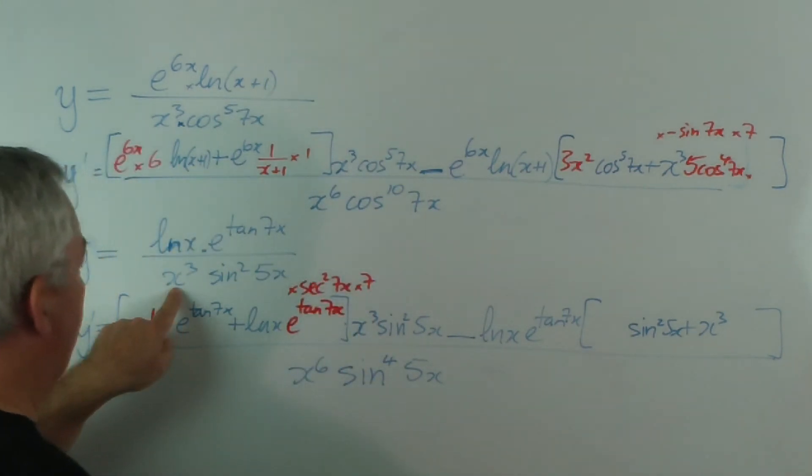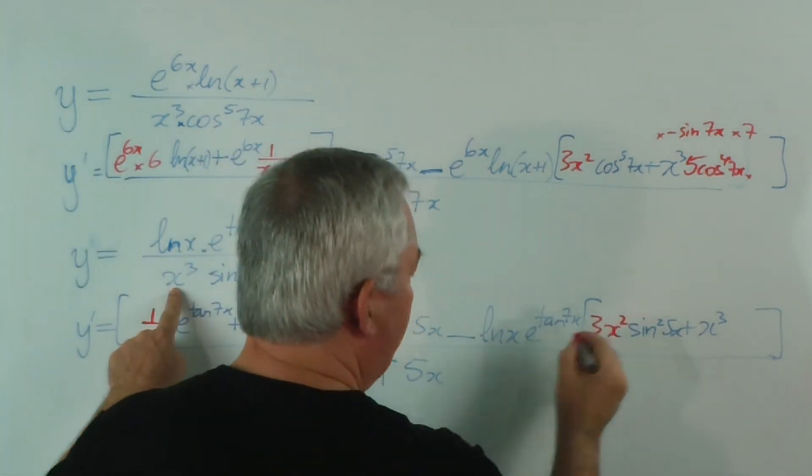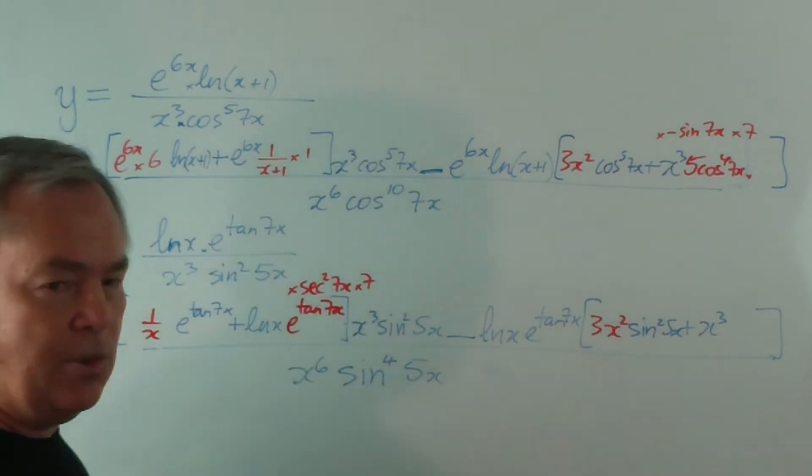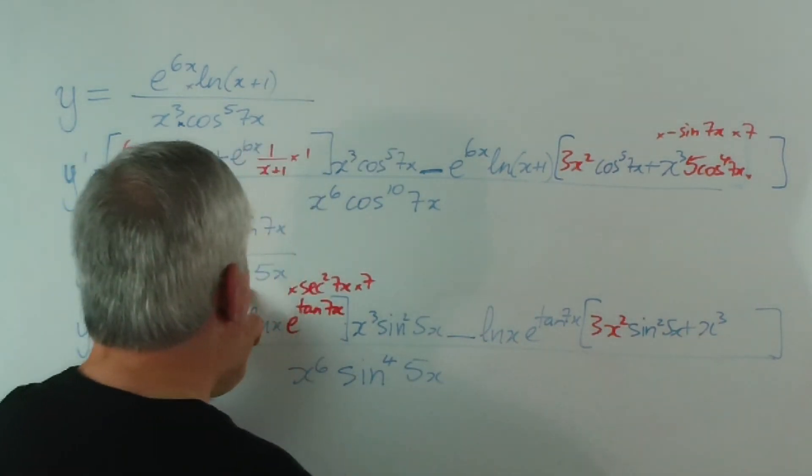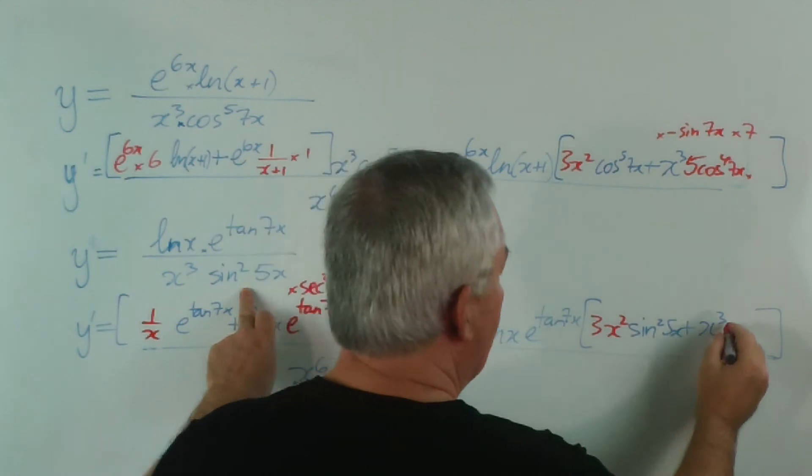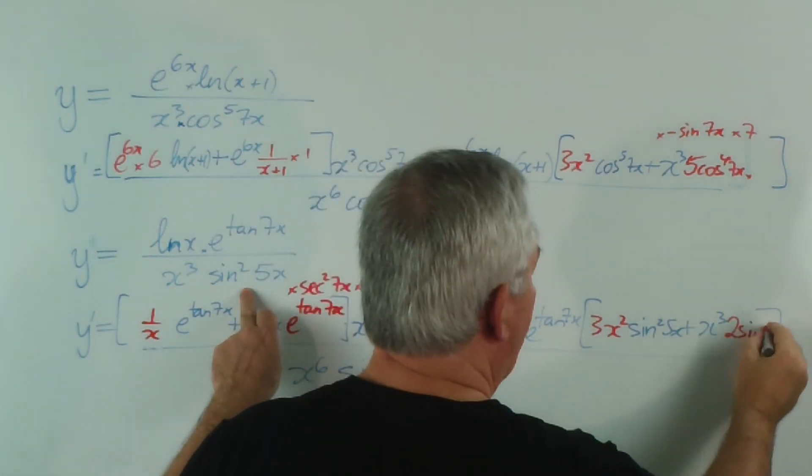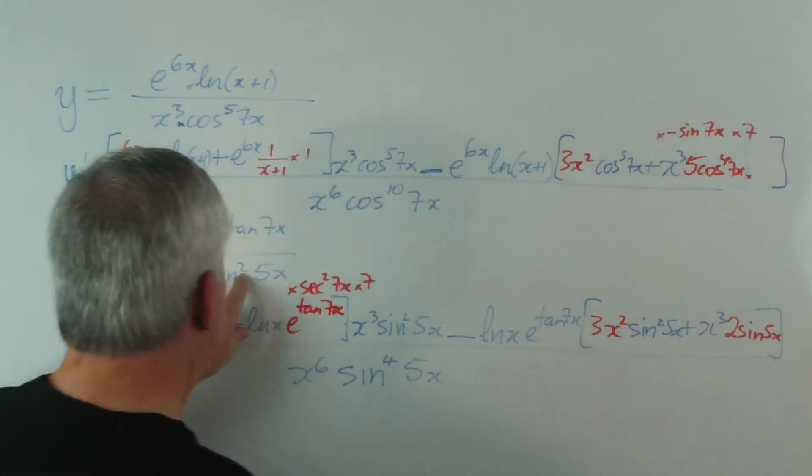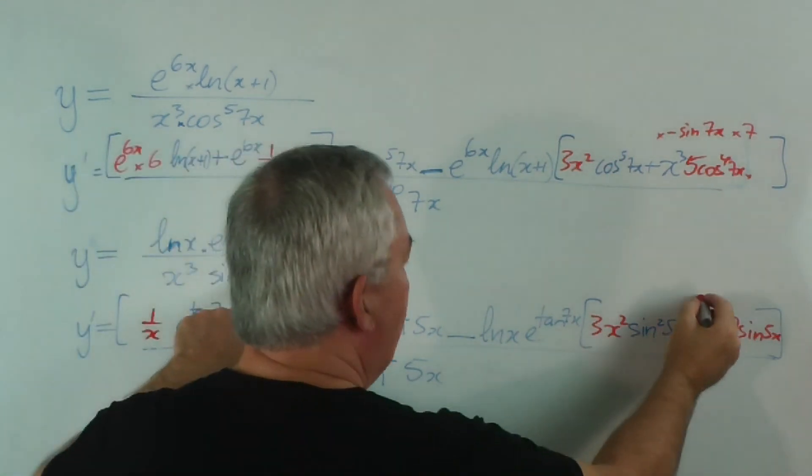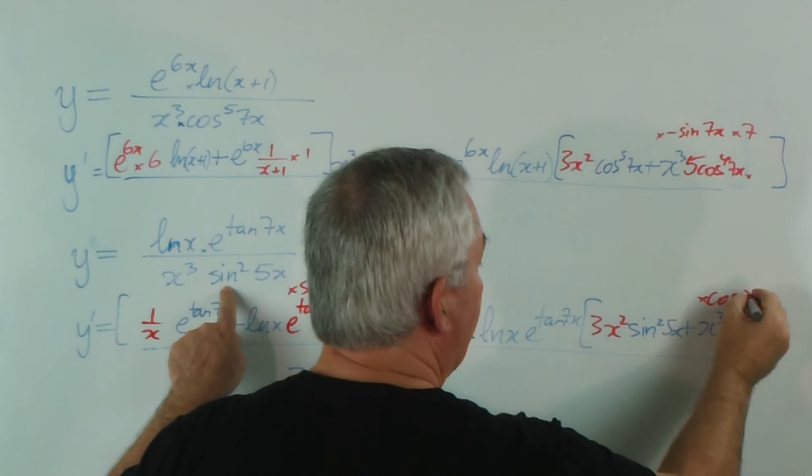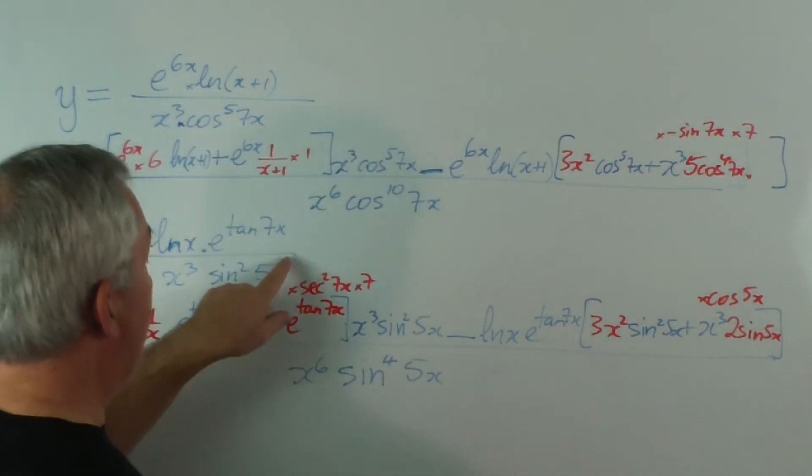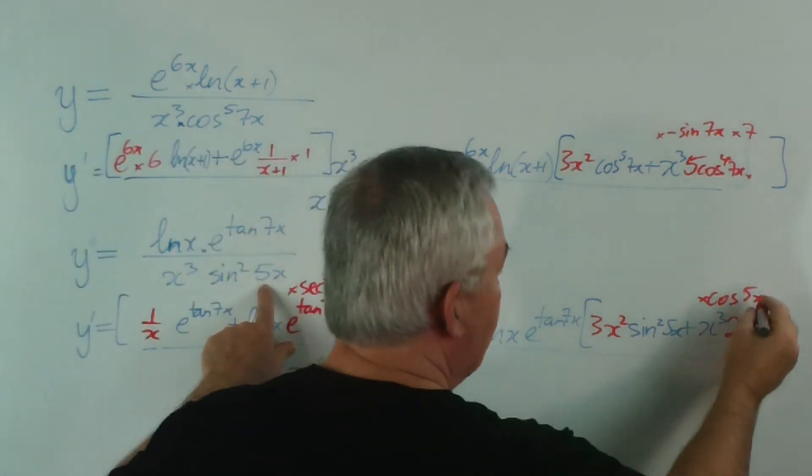Derivative of x³ is 3x². Then we leave the sin²(5x) alone, leave the x³ here, and the derivative of sin²(5x) is 2sin(5x), that deals with the power of 2, times the derivative of sin is cos, times the derivative of the function 5x inside.